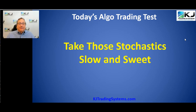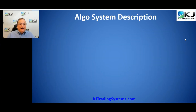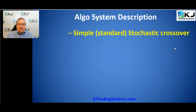Today's strategy I'm going to test uses stochastics slow — 'slow and sweet' is the way I like to think of them. First off, please subscribe to my channel if you haven't already. This is just a simple standard stochastic crossover — there's not going to be anything really unique about it. I just wanted to test some of the basics, some of those traditional ones that you've heard about.